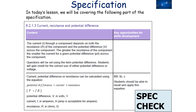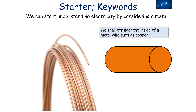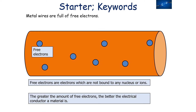We're going to look at current, resistance, and potential difference. We can start understanding electricity by considering a metal. Let's consider the inside of a metal wire such as copper. Metal wires are full of free electrons. Free electrons are electrons which are not bound to any nucleus or an ion, so as a result, the greater the amount of free electrons, the better an electrical conductor a material is.